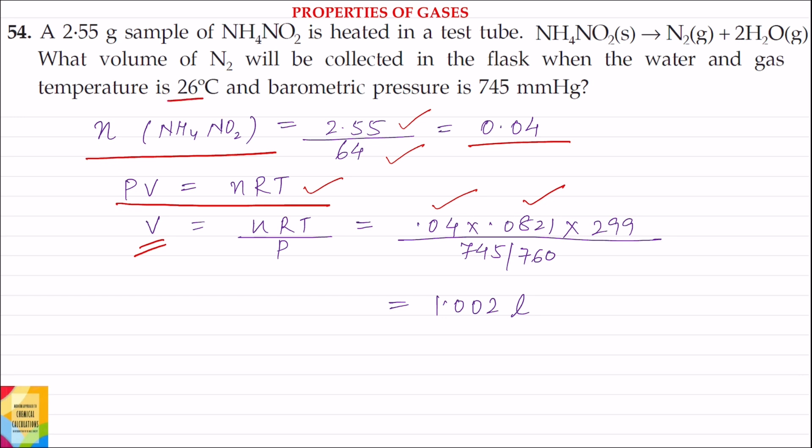Temperature is given in degree centigrade. So we will convert it into Kelvin. So temperature in Kelvin will be equal to 273 plus 26 and this is equal to 299 Kelvin.